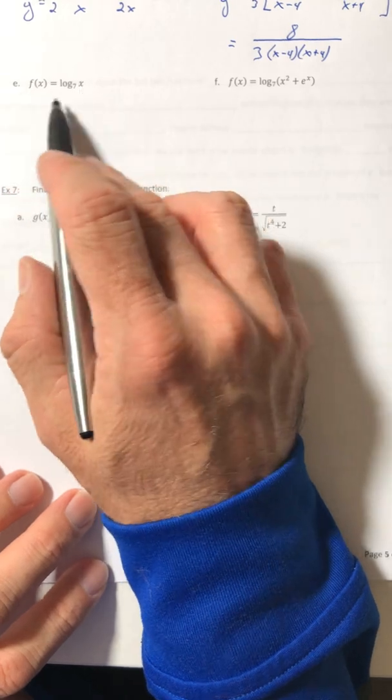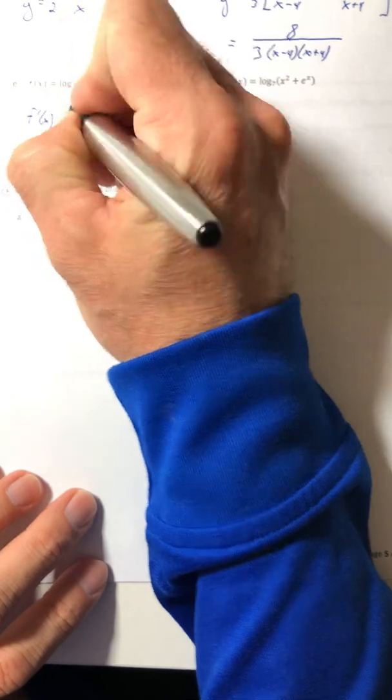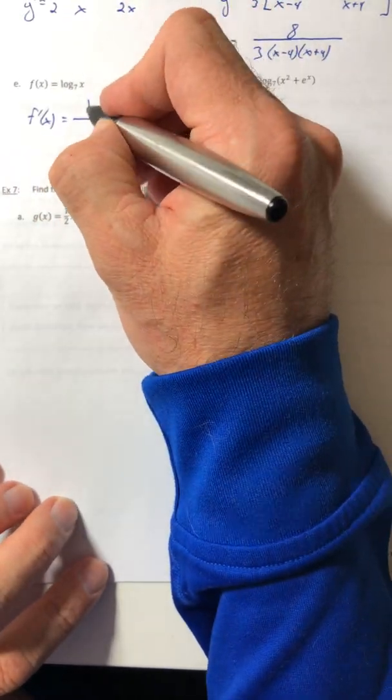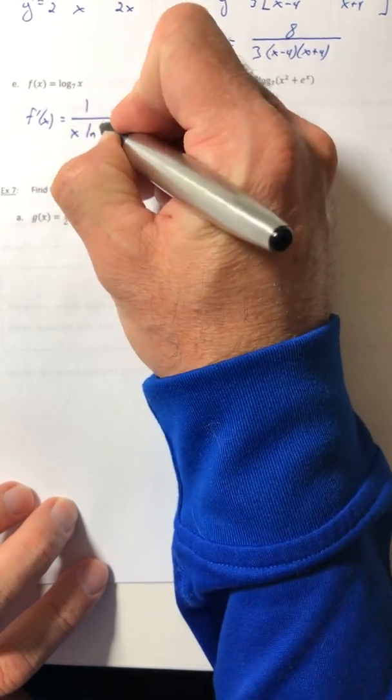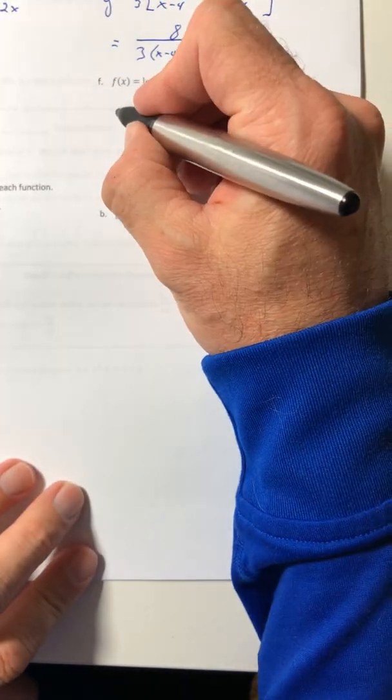Okay, let's change the base. Example E. So the one's on top, the x underneath, as well as ln of 7, or ln of your base. Okay, so let's do that again. Part F.